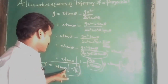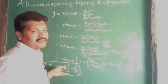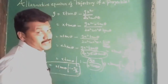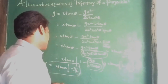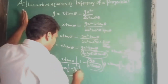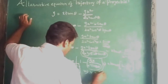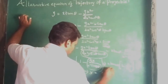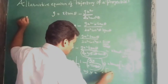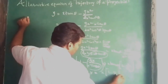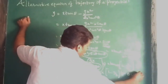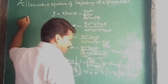For angular projection at θ equal to 45 degrees, then y equal to x·tan 45° into 1 minus x by R. Since tan 45° equals 1, y equal to x into 1 minus x by R. This is the special case for θ equal to 45 degrees.